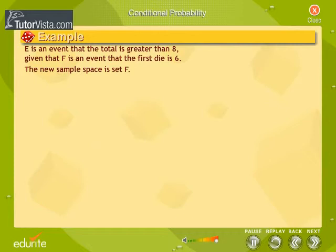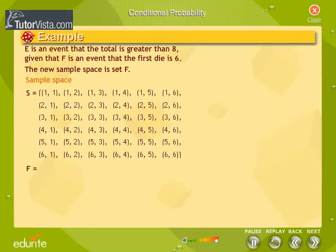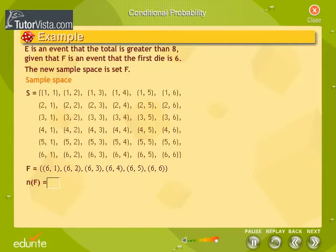For event E, the sample space gets reduced from set S to subset F, and the new sample space is set F. Click on the elements in the sample space S to select the elements of F. Then find the number of elements of set F and key in the answer.